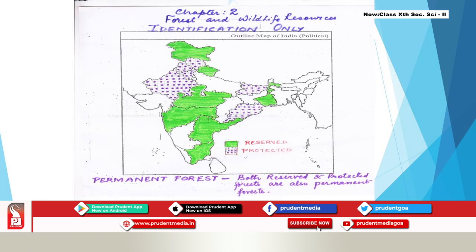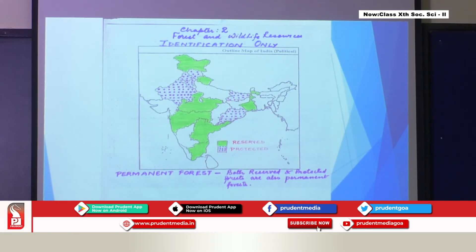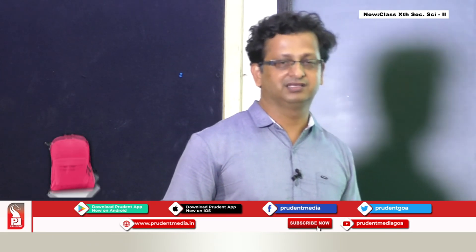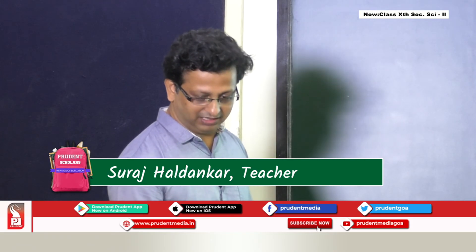Protected forests cover about one third of the total forest area and protect forests from further depletion. States with large protected forests include Bihar, Haryana, Punjab, Himachal Pradesh, Orissa, and Rajasthan. Unclassed forests are forest and wasteland belonging to government as well as private individuals and communities, found mostly in northeastern states and parts of Gujarat, managed by local authorities.